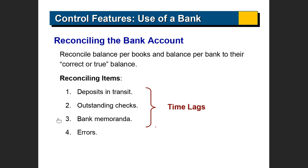The bank memoranda includes things that the bank has done that you have not done — either positives or negatives, such as a bank charge or an automatic deposit. On top of that, there could be errors made by your accounting crew or by the bank. Although errors are not very common, they can happen, and in those cases you have to adjust.